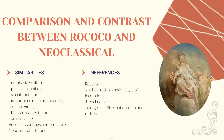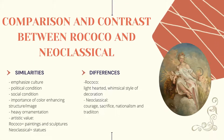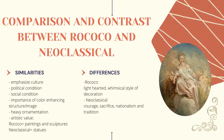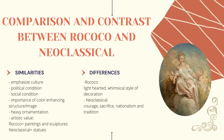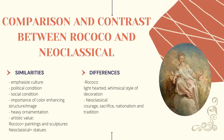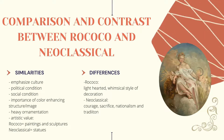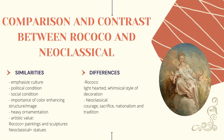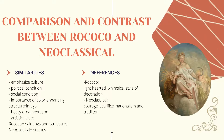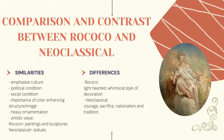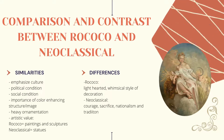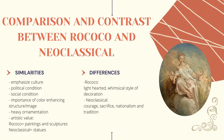When looking at both Rococo and Neoclassical eras, we can spot similarities and differences about each. They both are able to emphasize culture, political condition, and social condition in their theme. Both find the importance of color enhancing their elements, as well as having heavy ornamentation. Lastly, both keep their artistic value using decorative features, such as paintings and sculpture for Rococo, and statues for Neoclassicism.